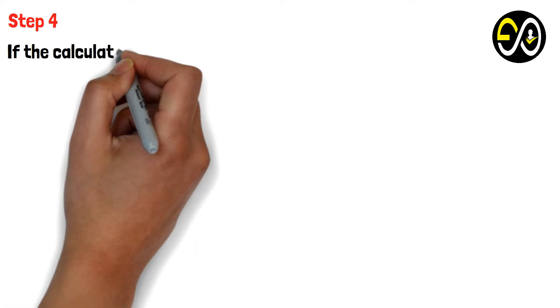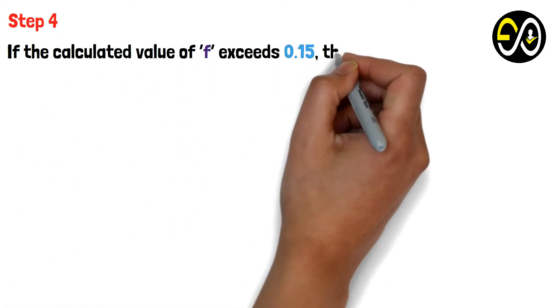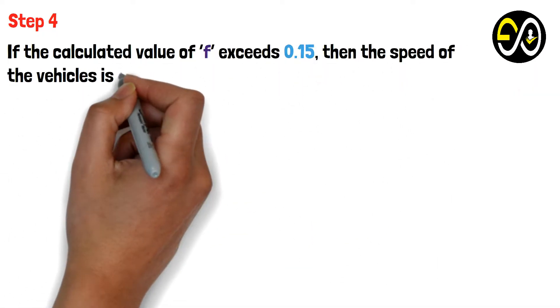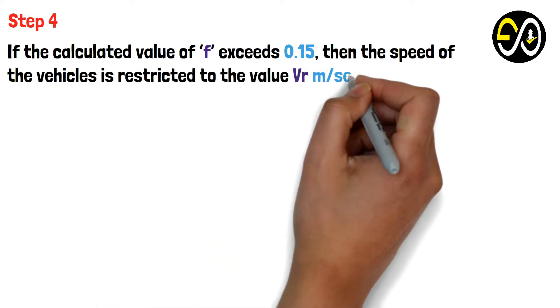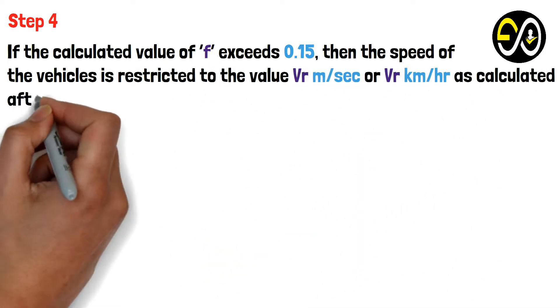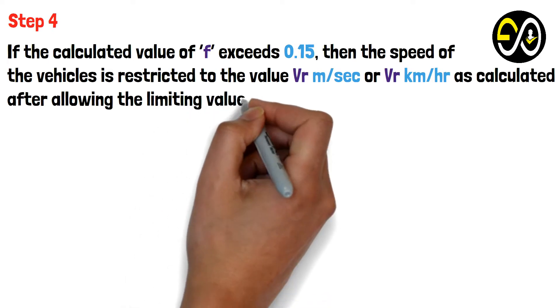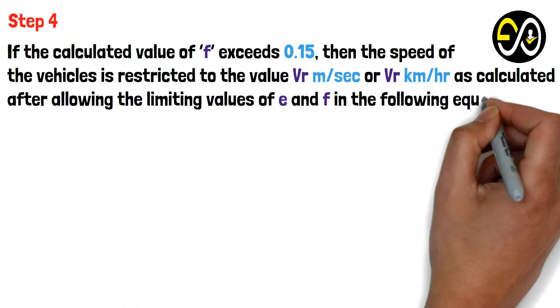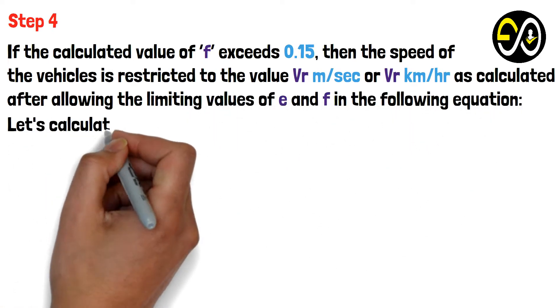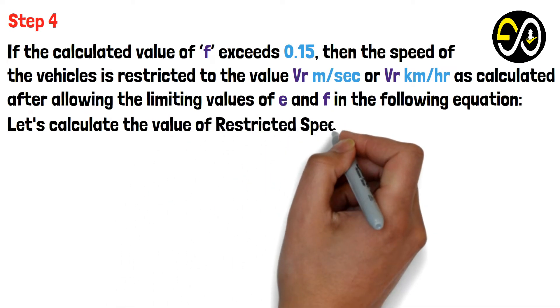Step 4: If the calculated value of f exceeds 0.15, then the speed of the vehicles is restricted to the value Vr meter per second or Vr kilometer per hour as calculated after allowing the limiting values of e and f. Let's calculate the value of restricted speed Vr.